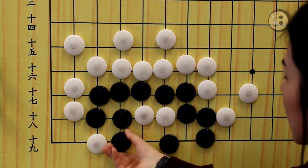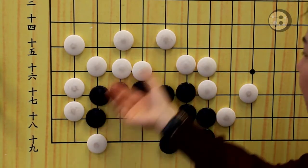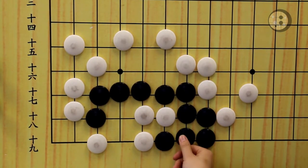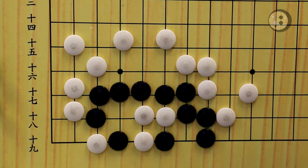You have one eye on the right and one eye on the left. So that's already alive. The correct move is hane on the first line, and when your opponent is trying to atari you, do not connect here. Instead, play the throwing move.